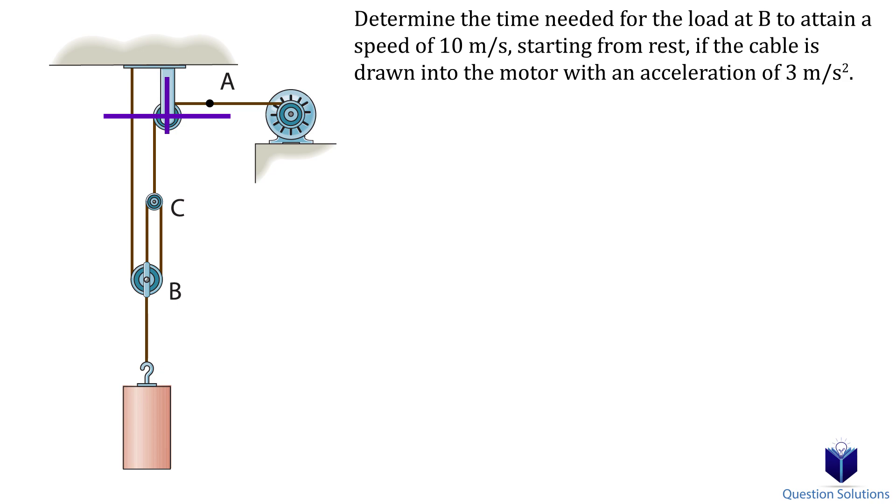Now for the position coordinates. We have SA, SB, and SC. Using these three position coordinates, we can express both of the cables in the system. So let's write our two equations. For the first cable, we have SA plus SC is equal to length 1. For the second cable, we have SB plus 2 times SB minus SC is equal to length 2. Let's do a bit of tidying up.